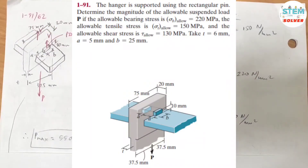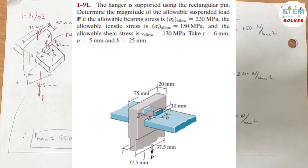The hanger is supported using the rectangular pin. Determine the magnitude of the allowable suspended load P if the allowable bearing stress is 220 MPa, the allowable tensile stress is 150 MPa, and the allowable shear stress is 130 MPa. T equals 6 mm, A equals 5 mm, and B equals 25 mm.